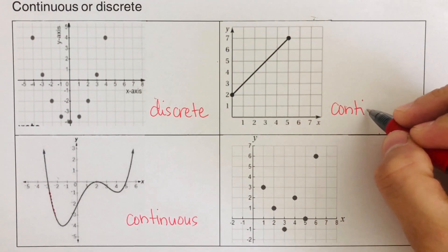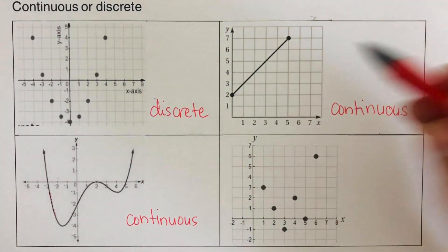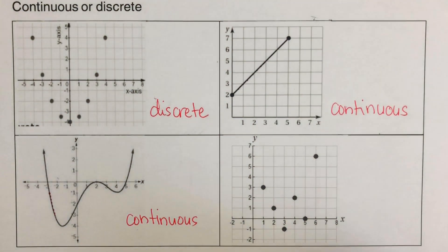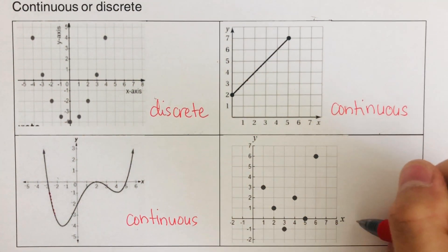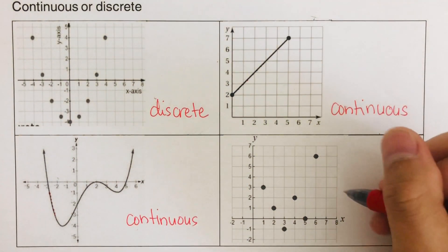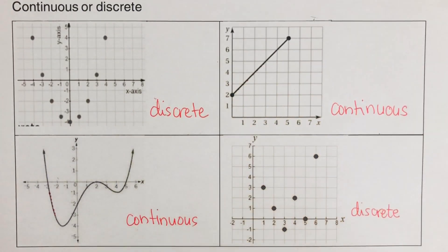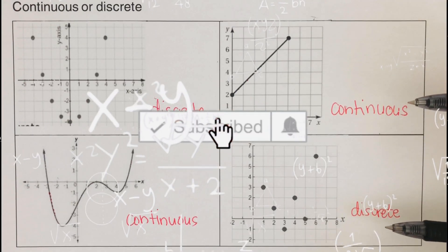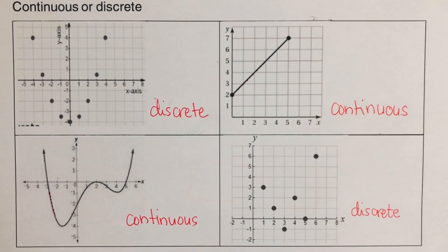This first example is continuous because the dots are connected with a line, and remember a line is made up of an infinite number of dots. The second one is discrete since the dots are not connected — they're scattered but not joined. Did you get the same answers — continuous and discrete? Good. If you find this video helpful, hit like and subscribe for more math videos. See ya!